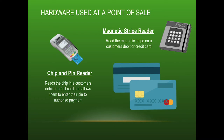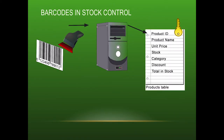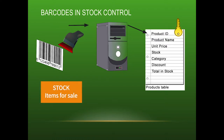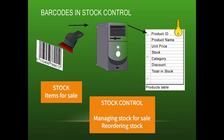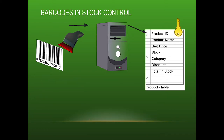Stock control refers to managing all the merchandise and products inside a store. Managers need to manage this stock — when everything sells you have to buy more, and you need to make decisions about how much to buy and when. This used to be a manual task, but barcodes now allow it to be automated, and barcodes in stock control are all about that process of automation.